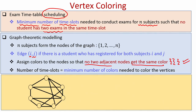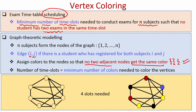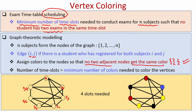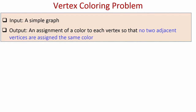For instance, given a graph with 7 subjects S1 through S7, we could take 7 time slots scheduling one exam each, but it turns out just 4 slots suffice. Subject 7 and subject 4 can be scheduled together because no student has taken both simultaneously. Similarly, subject 5 and subject 3 can be scheduled together because no student has taken both subjects, and so on.